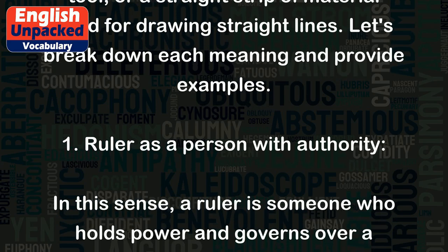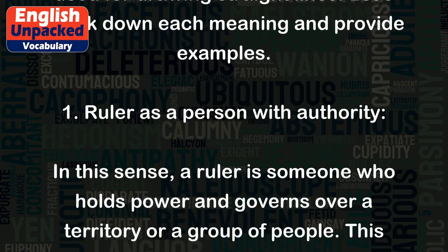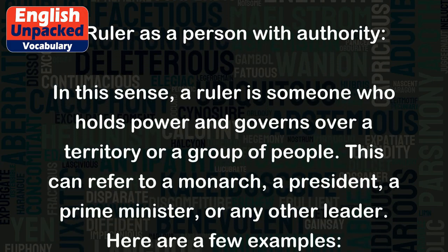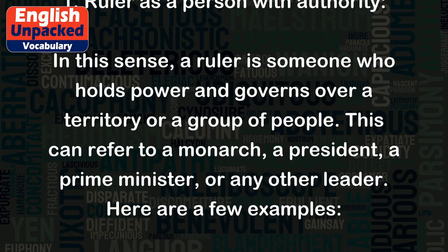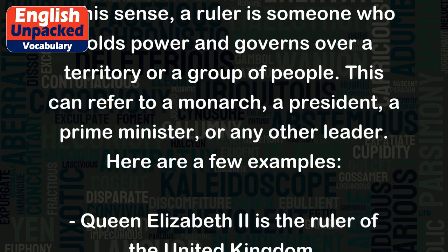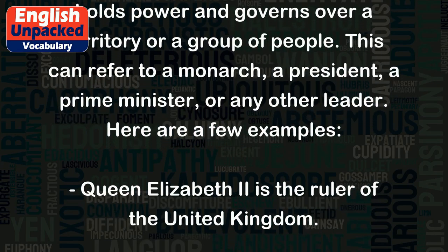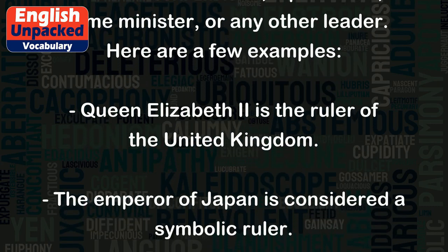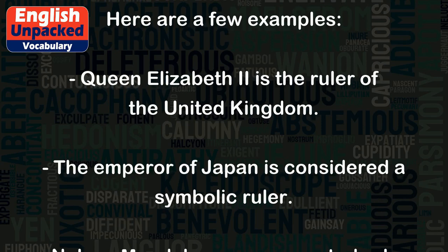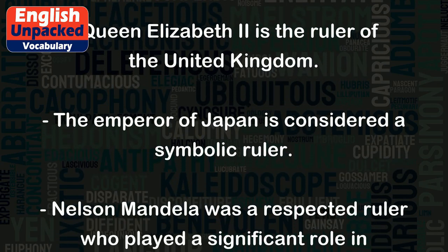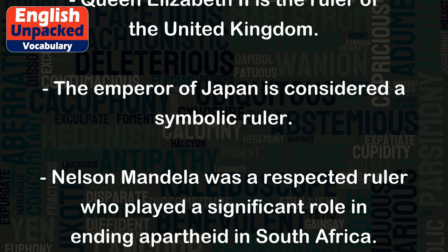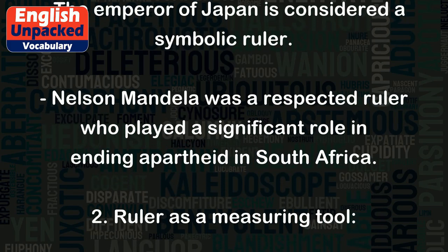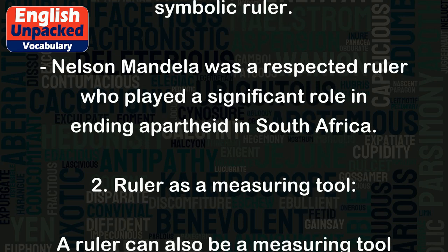1. Ruler as a person with authority. In this sense, a ruler is someone who holds power and governs over a territory or a group of people. This can refer to a monarch, a president, a prime minister, or any other leader. Here are a few examples: Queen Elizabeth II is the ruler of the United Kingdom. The Emperor of Japan is considered a symbolic ruler. Nelson Mandela was a respected ruler who played a significant role in ending apartheid in South Africa.